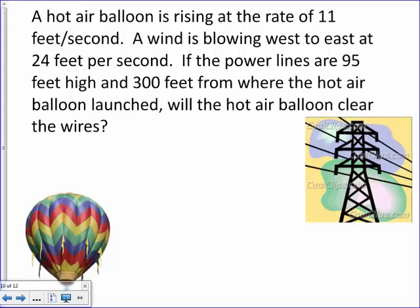So I'll show you a few more examples here. So a hot air balloon is rising at the rate of 11 feet per second. A wind is blowing west to east at 24 feet per second. If the power lines are 95 feet high and 300 feet from where the hot air balloon is launched, will the hot air balloon clear the wire? So do I need projectile motion in this case? Is there any gravity being pushed down and making this hot air balloon start to come back to the ground? Not yet. You know, because this thing is rising at a rate of 11 feet per second. So there is no projectile motion.